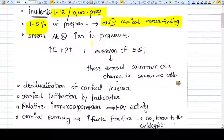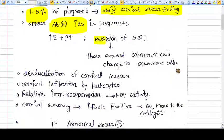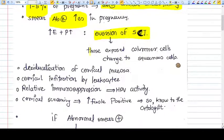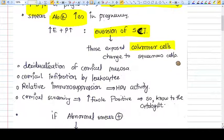There are increased abnormalities during pregnancy on the smear because pregnancy is a hyperestrogenic state. There will be eversion of the squamous columnar junction, so those exposed columnar cells to the vaginal acid will change to squamous cells.